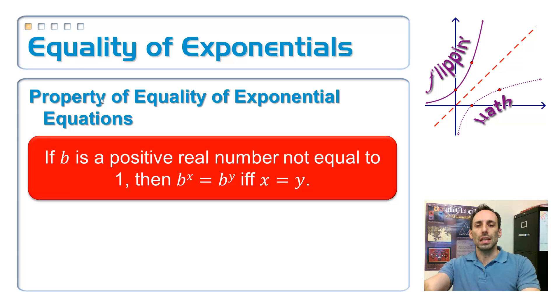Okay, so this is the equality of exponentials, a property of them. So right there in the middle in red, if b is a positive number, a positive real number that's not equal to 1, just like the base of exponential can't be 1, doesn't make sense, then b^x is equal to b^y if and only if x is equal to y.